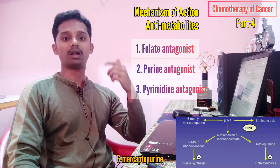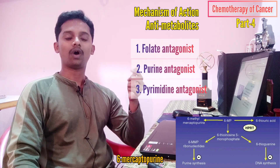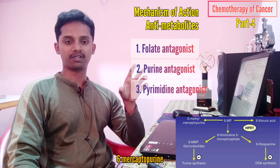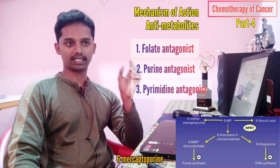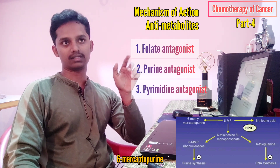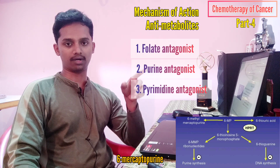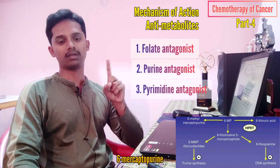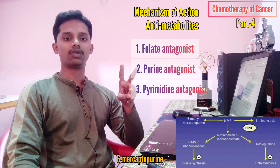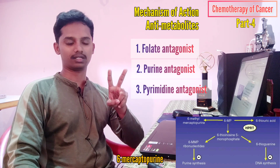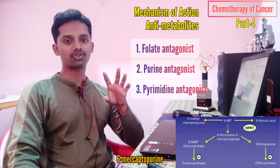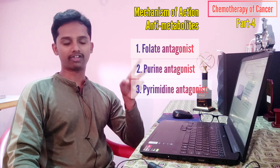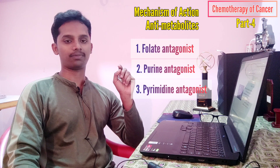Unlike methotrexate, which works directly, 6-mercaptopurine is converted to its active form once it enters the cancer cell. It is converted to 6-thioguanosine phosphate. This active form blocks two steps: one blocks purine synthesis, and the other blocks DNA synthesis. By inhibiting both these synthesis pathways, it blocks DNA replication. This is the mechanism of action of 6-mercaptopurine.